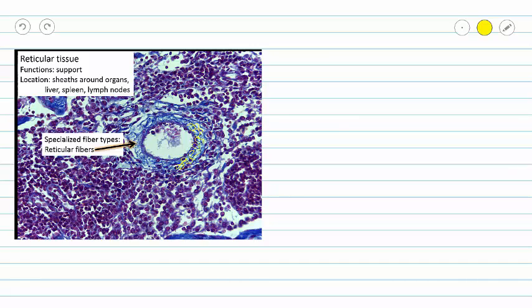And not just surrounding this capillary — these reticular fibers branch out and create a branching network in between all of our cells. So even when we're not even close to our blood vessel, we can see reticular fibers branching in all directions between our parenchymal cells.